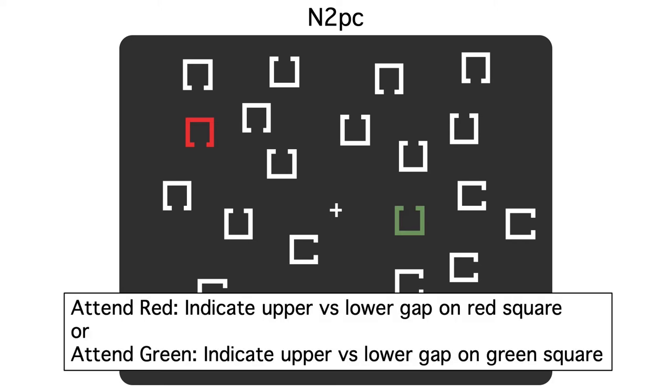Remember, subjects were instructed to attend to red in some trial blocks and green in others, and they pressed one of two buttons to indicate the location of the gap in the item of the attended color.